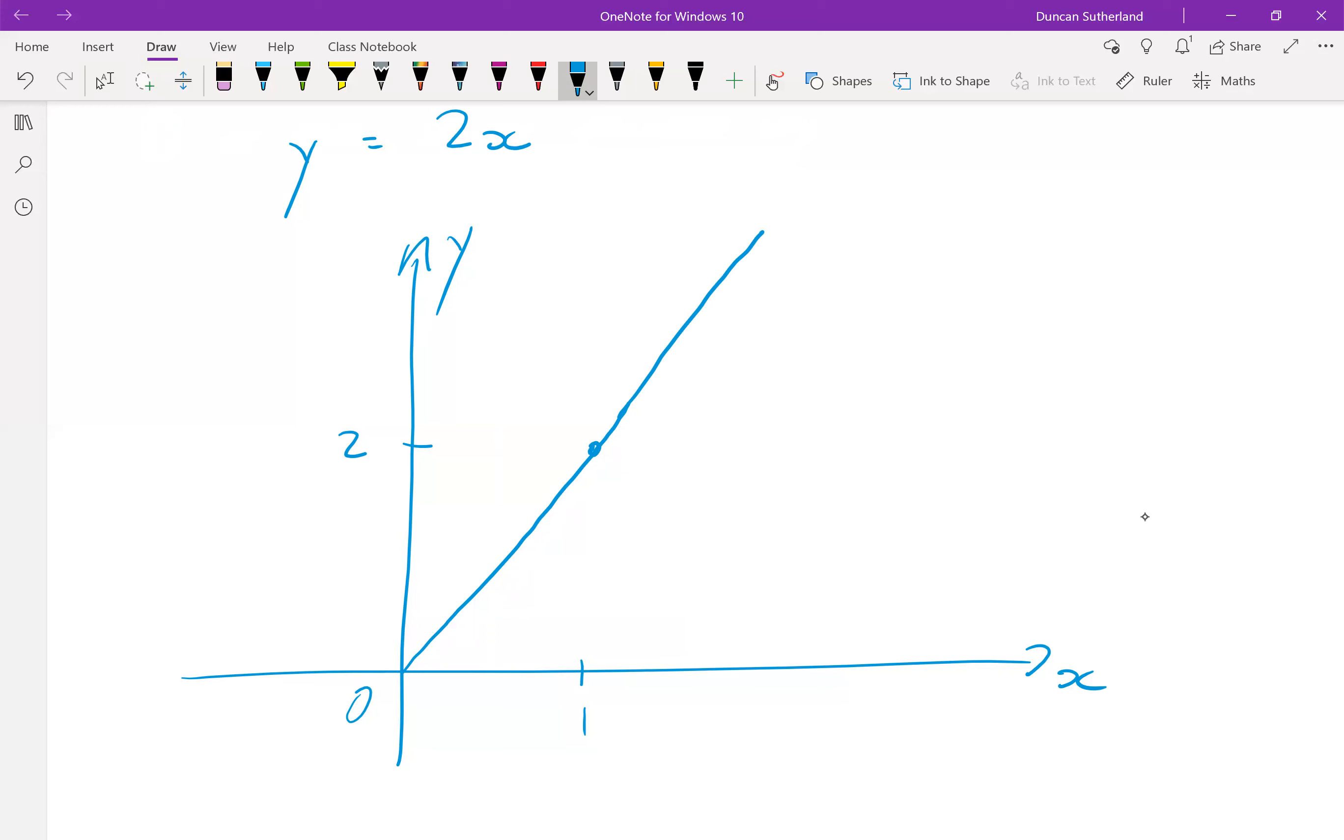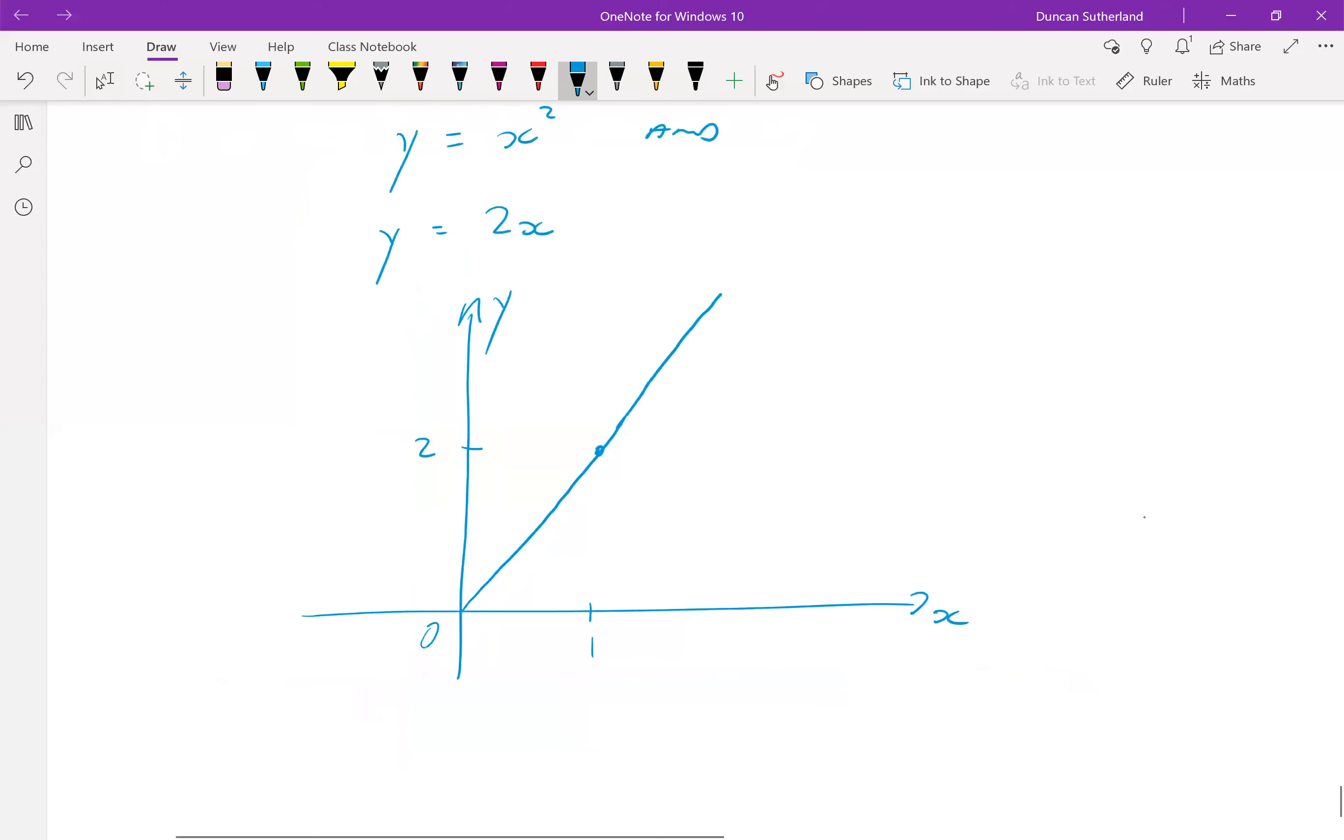Now, the other line, the curve, it's just a parabola, it's a happy parabola that starts at the origin and goes up. Let's figure out where these two lines intersect.